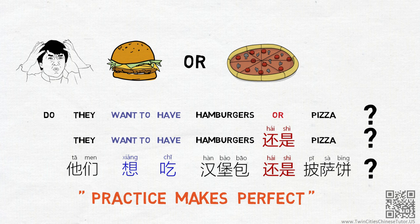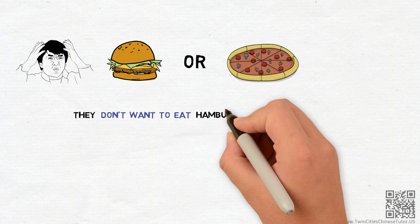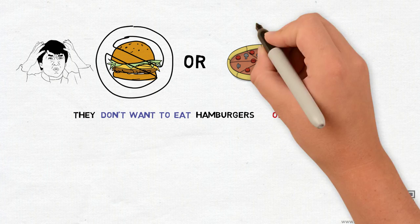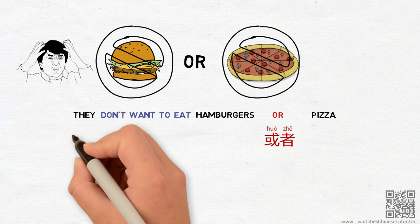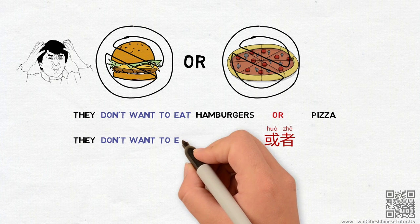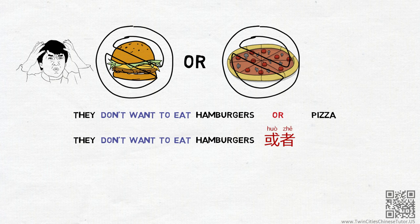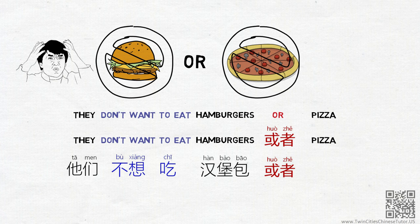If Jackie answers you with a statement, They don't want to eat hamburgers or pizza, he will probably use the word 或者 to express the meaning of OR. With the Chinese sentence structure, the statement will be, They don't want to eat hamburgers or pizza. Or in Chinese, 他们不想吃汉堡包或者披萨饼。